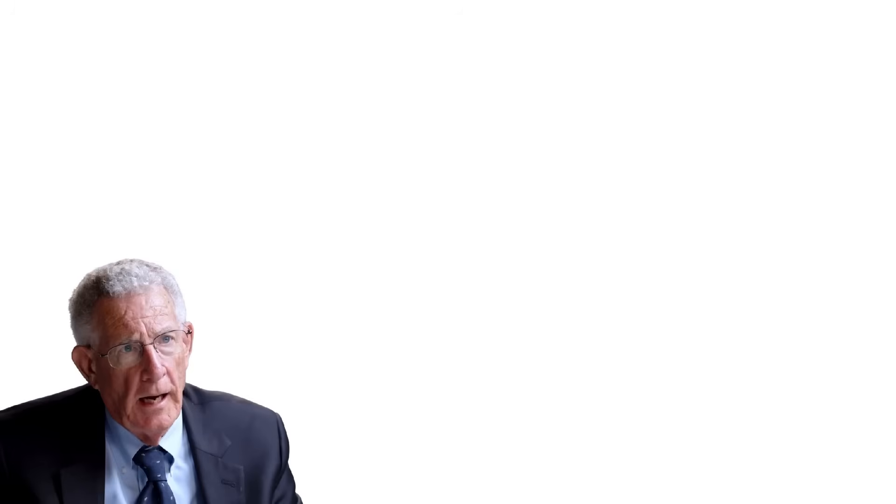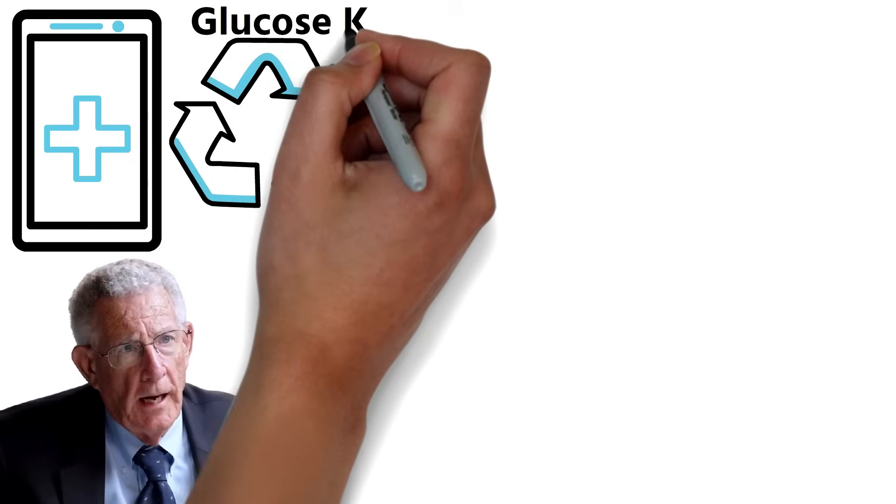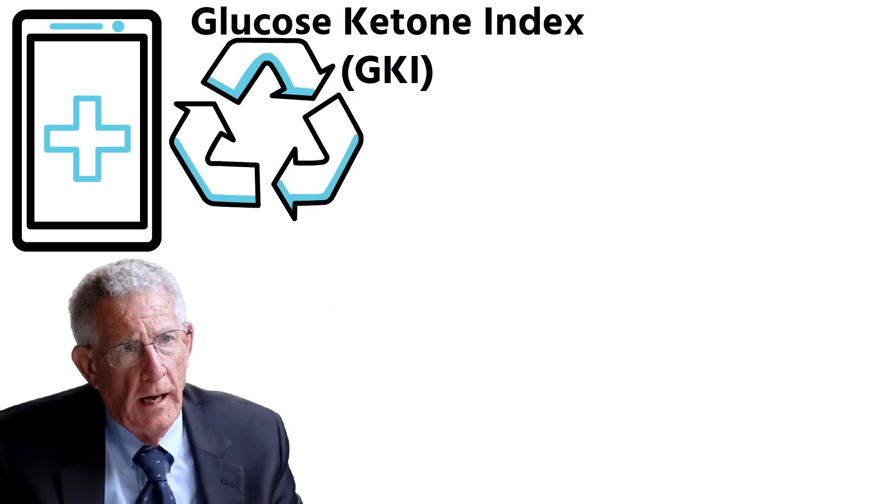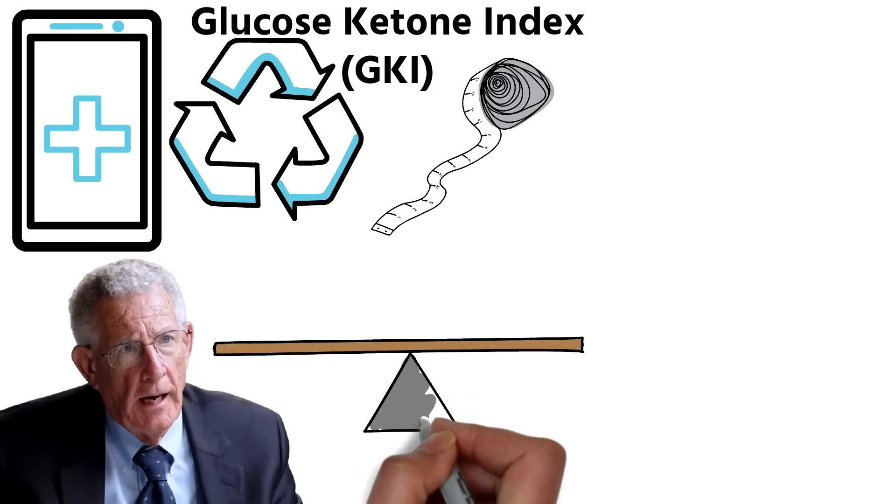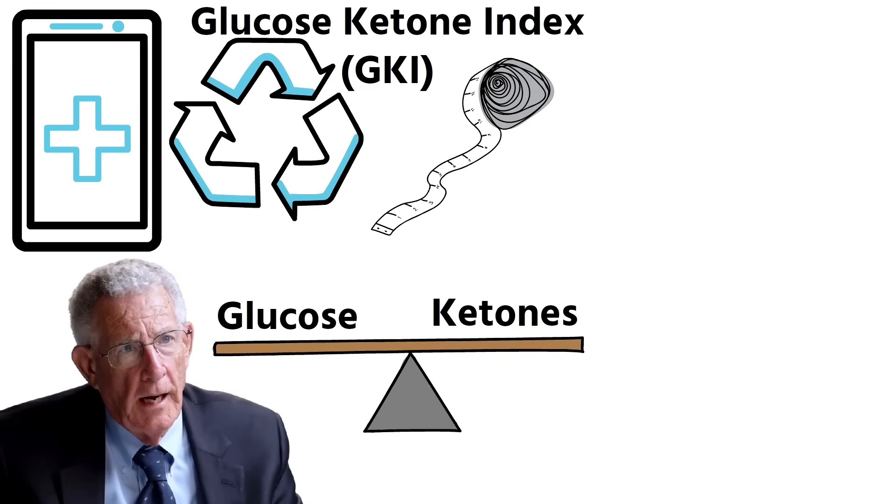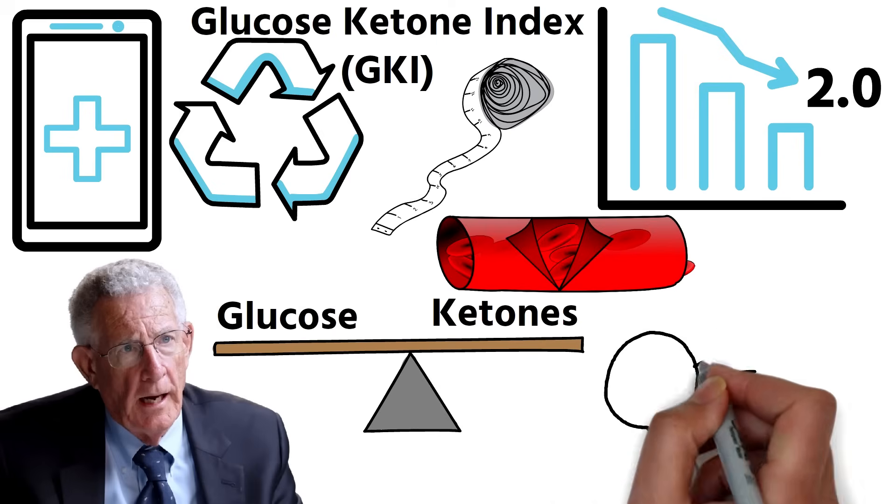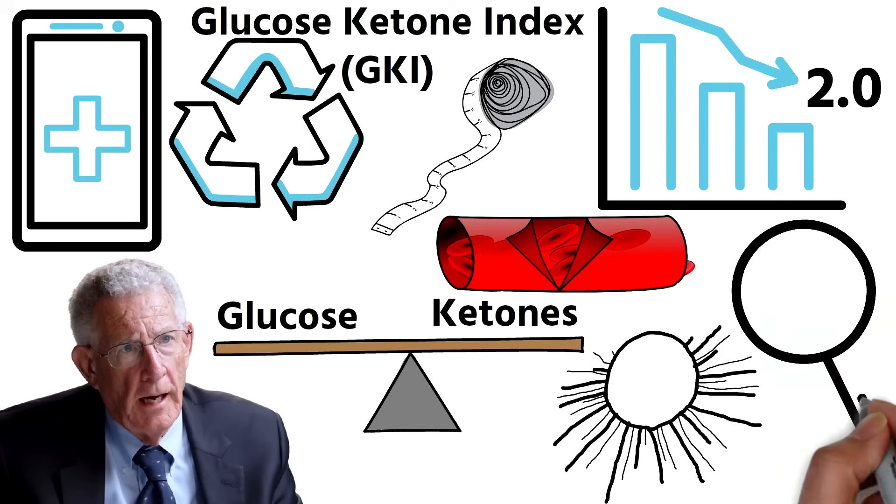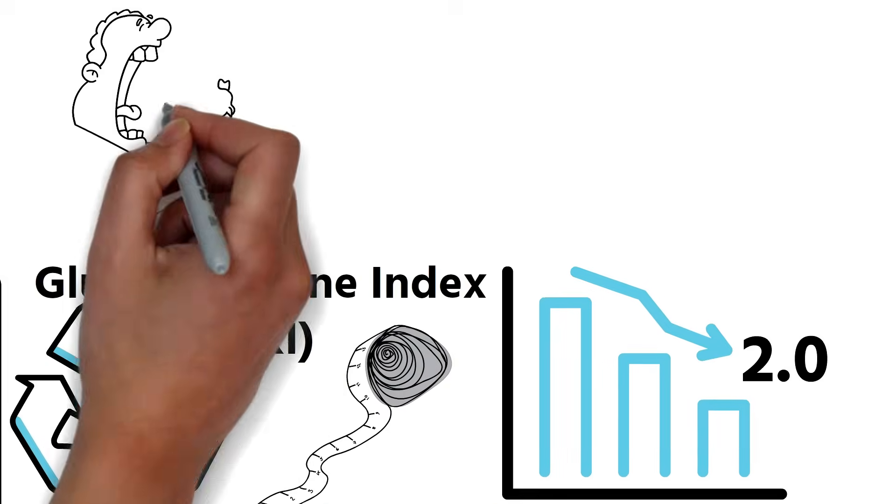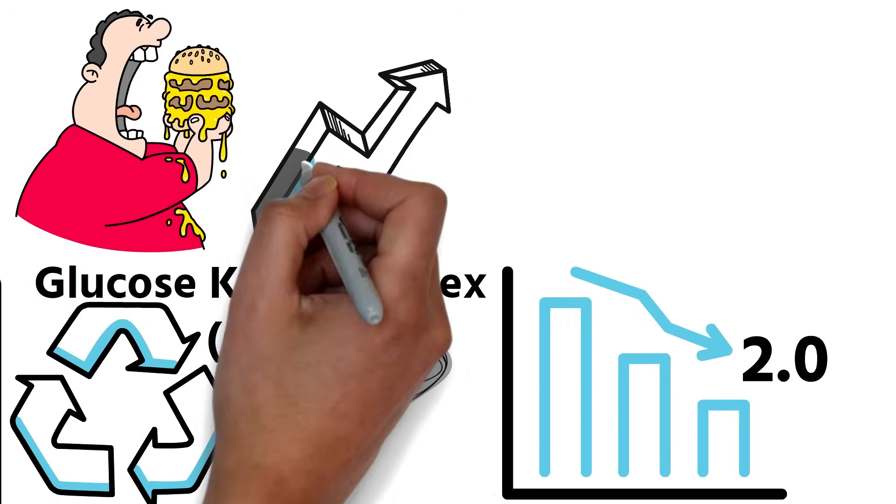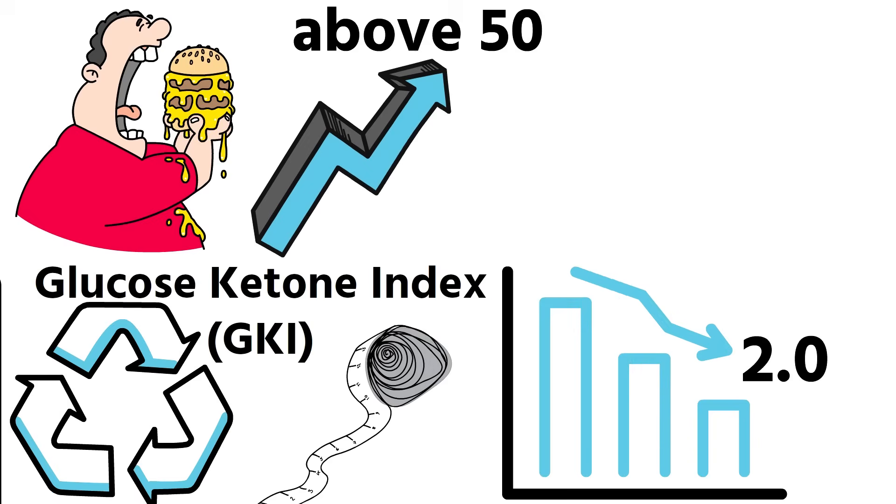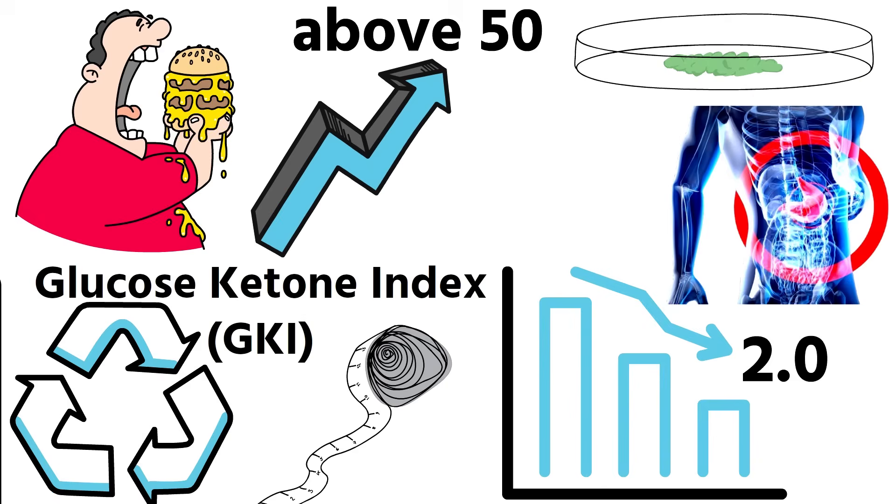Professor Seyfried recommends monitoring this metabolic shift through the glucose ketone index, or GKI. This simple measurement shows the balance between glucose and ketones in your blood. When your GKI drops below 2.0, cancer cells lose their ability to survive and multiply. In contrast, most people following a typical Western diet have a GKI above 50, a metabolic state that creates the perfect environment for cancer to grow. Let the GKI tell you what you can and cannot eat.